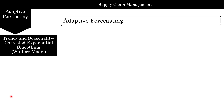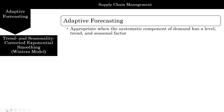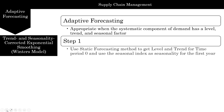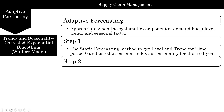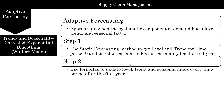The Winter's model is appropriate when demand has level, trend, and seasonality. Step one is to use the static forecasting method to get the level and trend for time period zero, then use the seasonal index for seasonality. The static model should be optimized, so we should get the optimized values before using them for level, trend, and seasonal index for the first year.